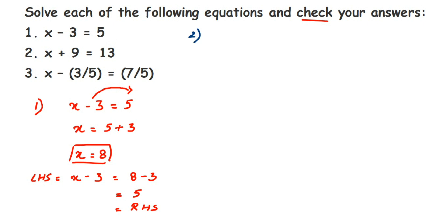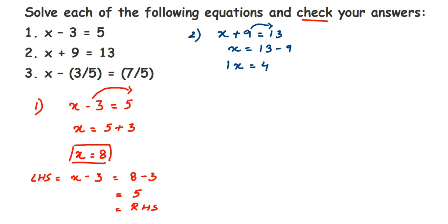For the second question, x plus 9 is equal to 13. Using the transpose method, 9 is positive so it becomes negative on the other side, giving x equal to 13 minus 9, which equals 4. So x is equal to 4.